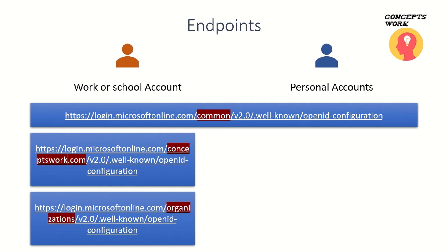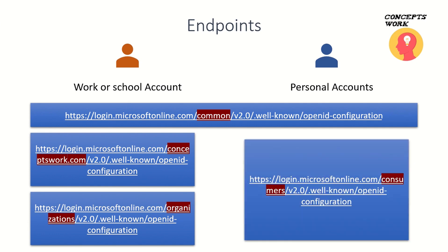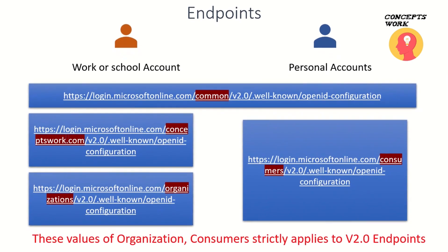For example, if I'm developing an application for users of ConceptsWork.com, I can use ConceptsWork.com instead of Common, or choose Organizations if it is a multi-tenant app. If I'm developing an application for personal accounts only, instead of Common I can choose Consumers. Note that Organizations and Consumers are intended only for v2.0 endpoints.